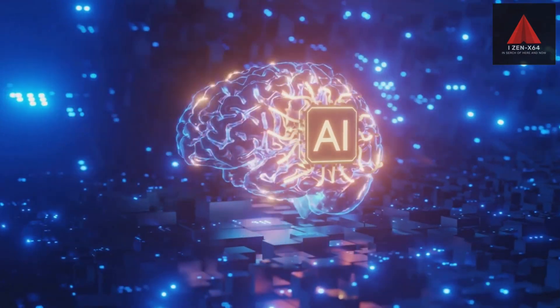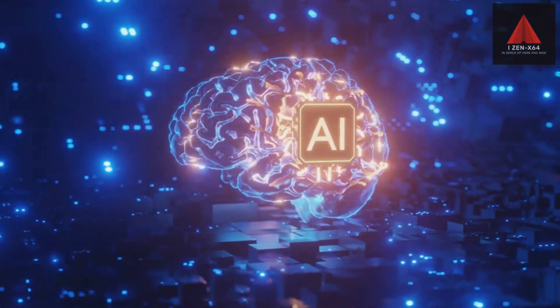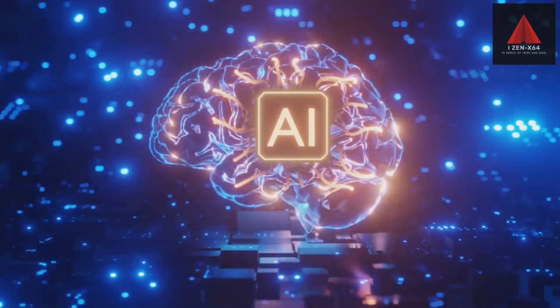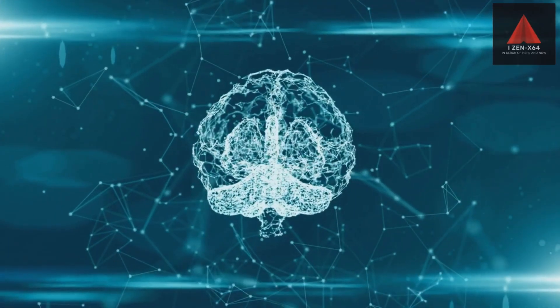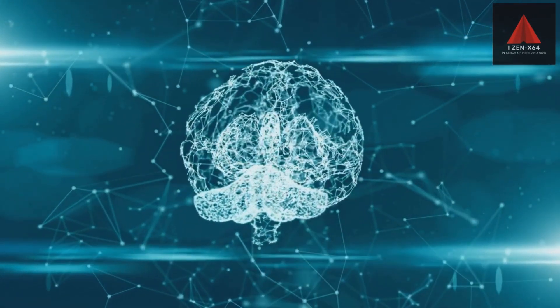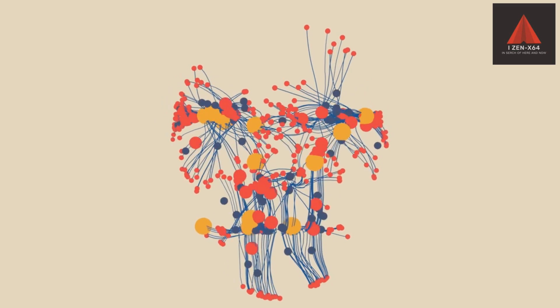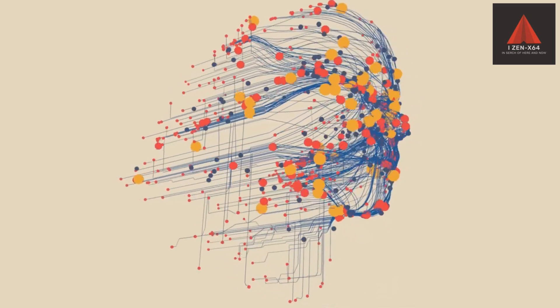Perceptron, developed by Frank Rosenblatt in 1957, was an early artificial neural network for pattern recognition. Neural networks, modeled after biological brains, are crucial in modern AI. With the advent of deep learning, their complexity and capabilities have soared.